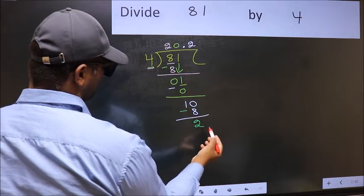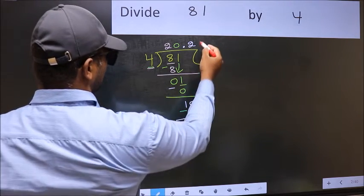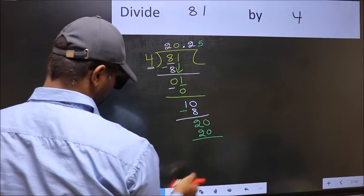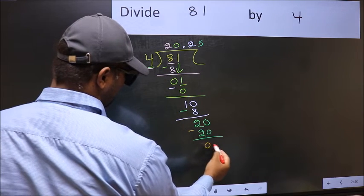We already have a decimal, so directly take 0. When do we get 20 in the 4 table? 4 times 5 is 20. Now you should subtract. 20 minus 20 is 0.